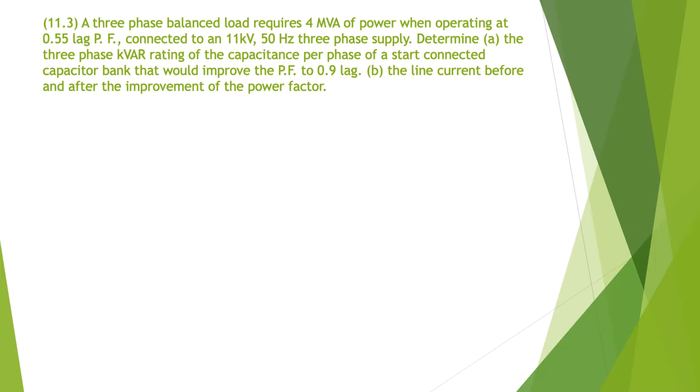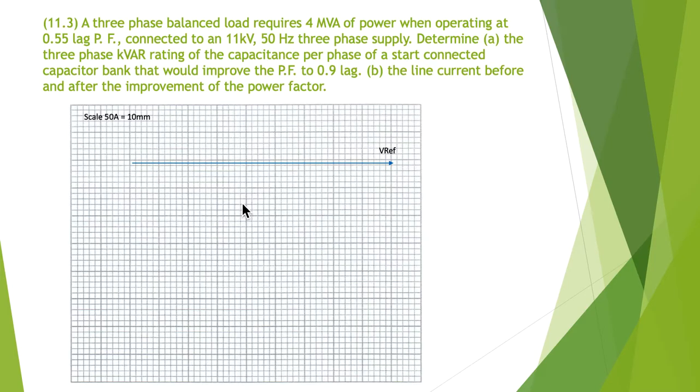We want to improve the power factor from 0.55 to 0.9, and find the line current before and after the improvement. So there's two ways to do this: we can do it by doing a carefully scaled and accurate phasor diagram, and we can also do it using trigonometry and Pythagoras. As we go, I'll explain both.